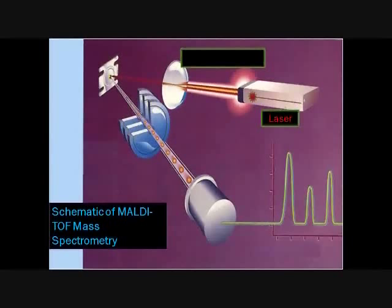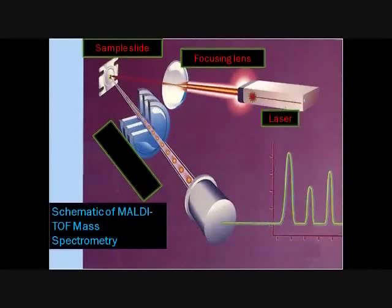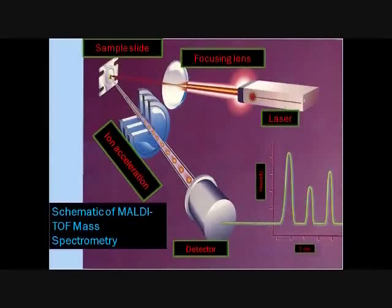A simple representation of a MALDI-TOC consists of six components. These are a laser, a focusing lens, a sample plate, a means to accelerate ions, an ion detector, and a data system to generate peaks.